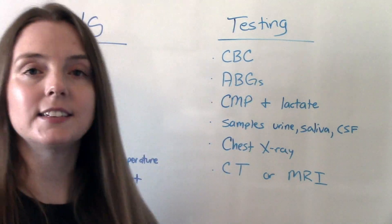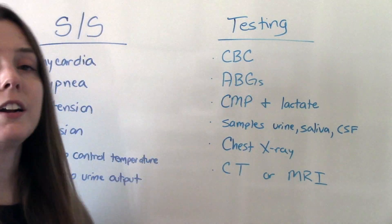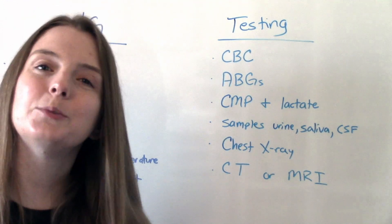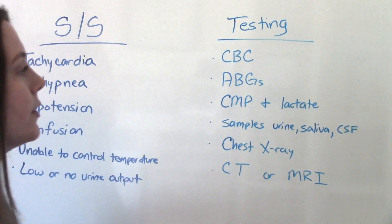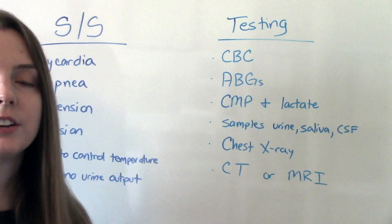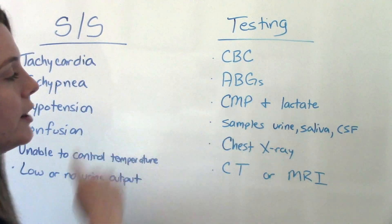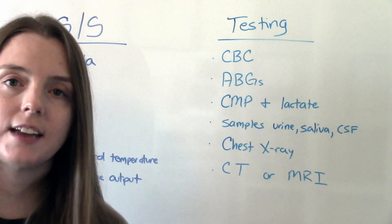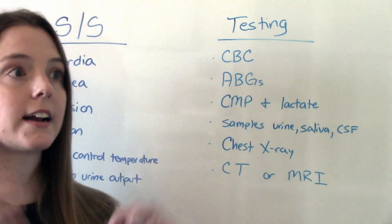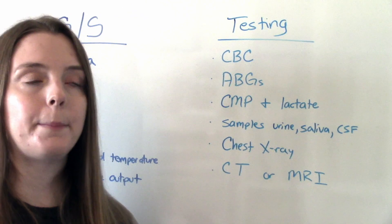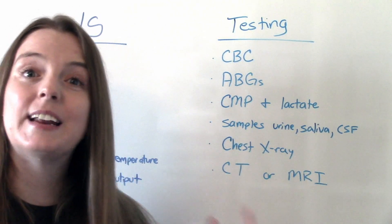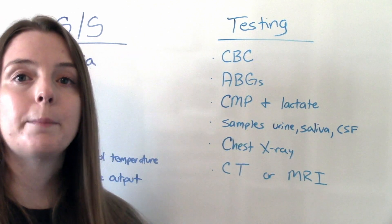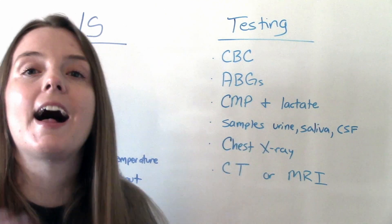When it comes to testing, we're going to do a CBC — one of the big things we'll look for is the white blood cell count, which will be elevated because of the infection. We'll do ABGs to make sure they're not acidotic, and a CMP for electrolytes. Especially important is checking their lactate levels. Lactate is a chemical produced by the body under stress, and something like a major infection is very stressful, so somebody with sepsis is going to have very high lactate levels.